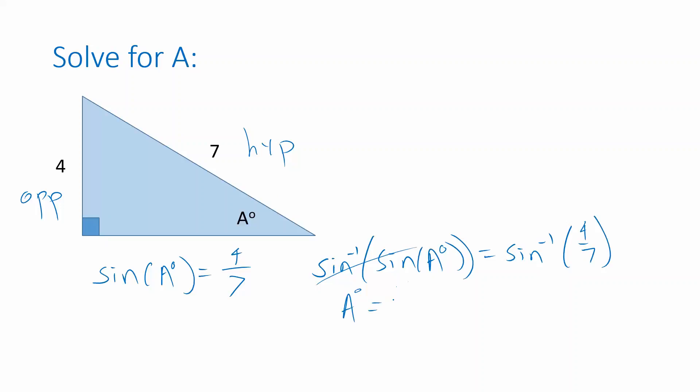We need to evaluate sine inverse of 4 sevenths in degrees to get the right value for A. We need to make sure that if we're getting a decimal approximation with a calculator, that the calculator is in degree mode. When I do that, I get 34.85 as a decimal approximation.